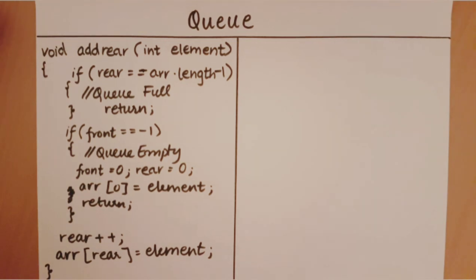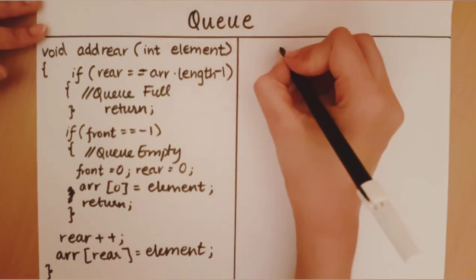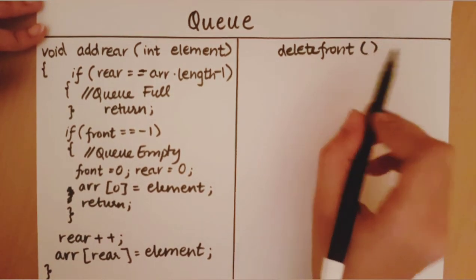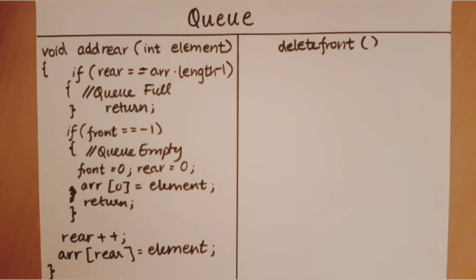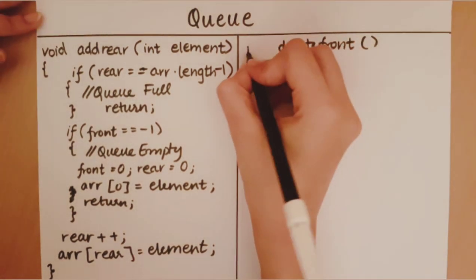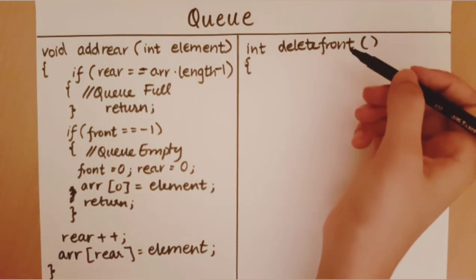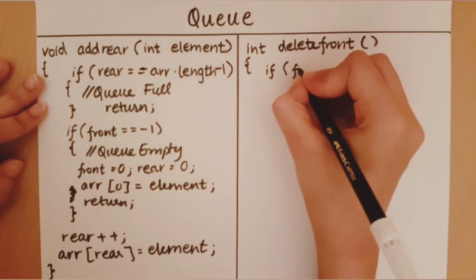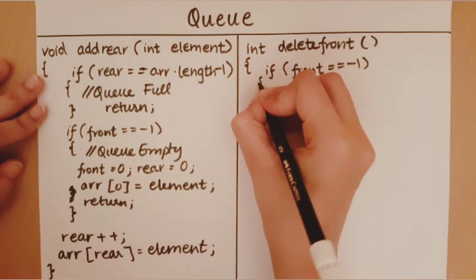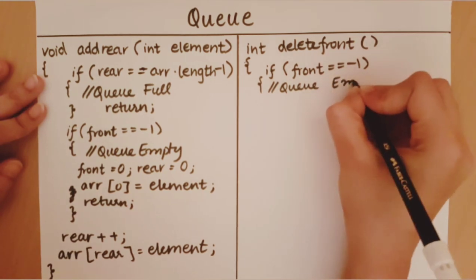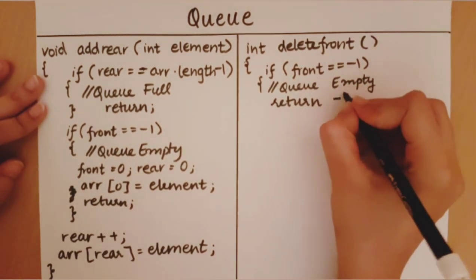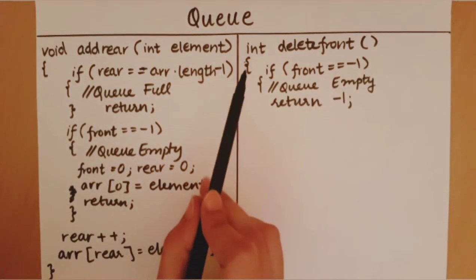Now let's look at how we delete an element from the front of a queue. This function has no input variable since we are just deleting from the queue, but it has a return type because we are going to return the element which we delete. The first thing we check when deleting from a queue is whether the queue is empty. If front is equal to minus one, the queue is empty and we return from the function — we cannot give a blank return statement, so we return a dummy integer since the return type is int.